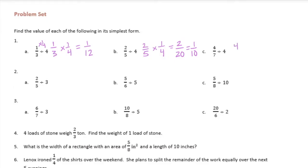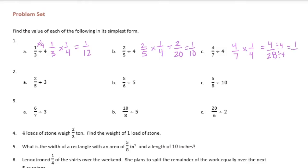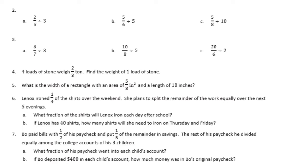Four-sevenths divided by four — I'm going to change that to times one-fourth — equal to four-twenty-eighths. We can divide both of those by four, and we'll get one-seventh. Two-fifths divided by three, or times one-third, is equal to two-fifteenths, and that cannot be simplified. Five-sixths divided by five would be times one-fifth, giving five-thirtieths, and we can divide both of those by five to get one-sixth.